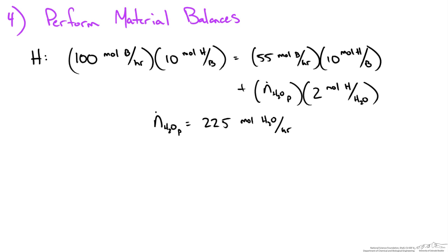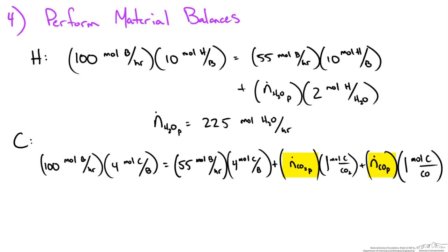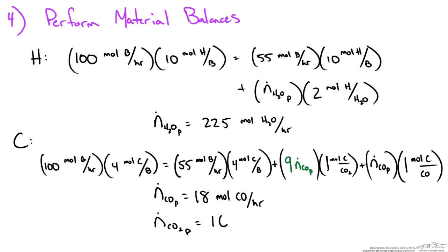Now we write a carbon balance over the reactor. Carbon enters in butane, and leaves in butane, carbon dioxide, and carbon monoxide. This balance has 2 unknowns — flow rates of CO2 and CO — so we use the ratio given in the problem statement: 9 times more carbon dioxide than carbon monoxide. Substituting that ratio in, we solve for the flow rate of carbon monoxide in the product stream and get 18 moles of CO per hour, and therefore 162 moles of CO2 per hour.